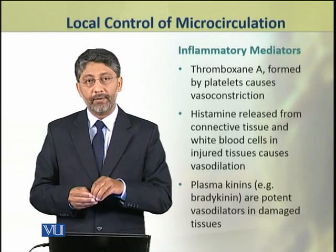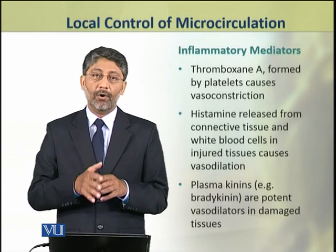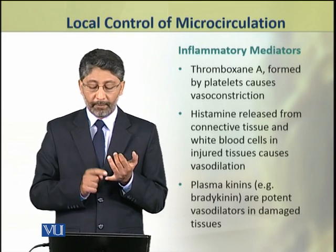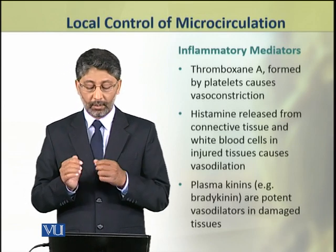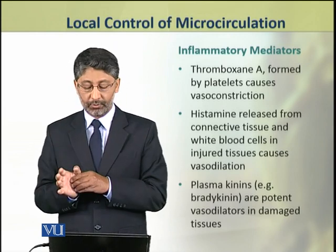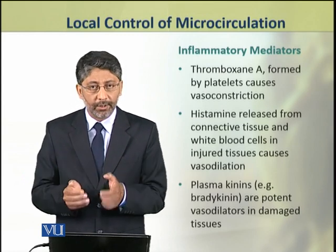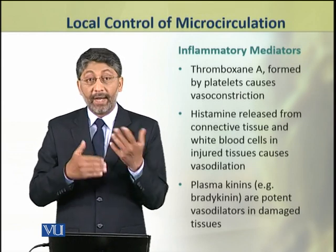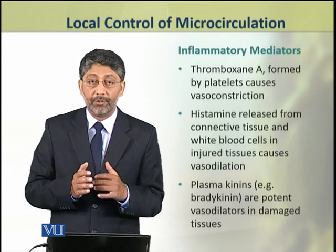Now we shall discuss the role of inflammatory mediators in the control of microcirculation. Thromboxane A, which is formed by platelets, causes vasoconstriction locally. Histamine, which is released from connective tissue and white blood cells in injured tissues, causes vasodilation, increasing blood flow in the injured tissue. The plasma kinins — for example, bradykinin — are potent vasodilators in damaged tissues.